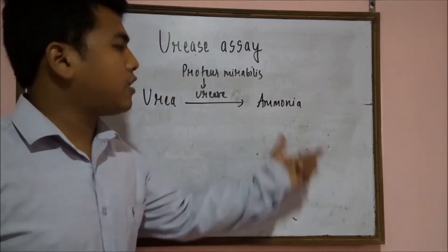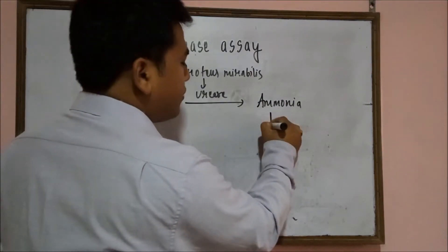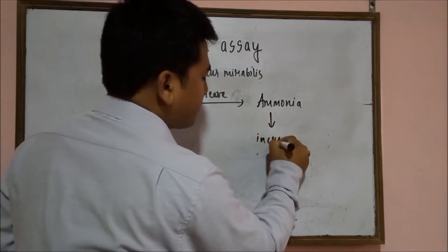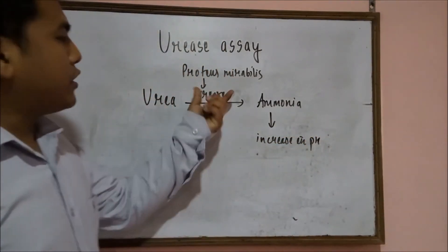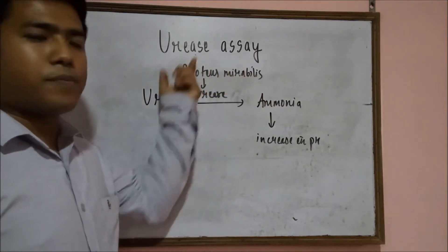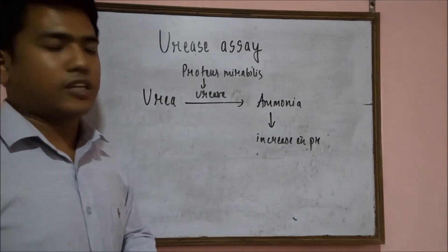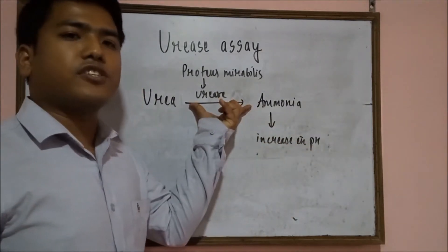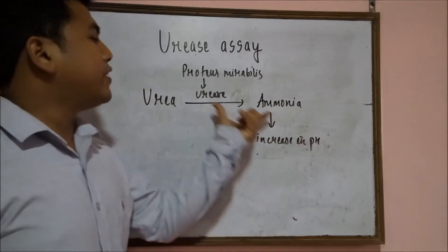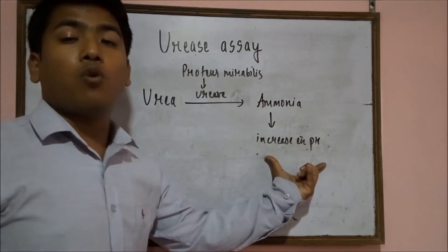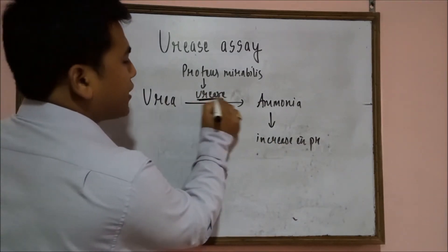Whenever the concentration of ammonia is higher in a test tube, there will be an increase in pH. If the concentration of urease is high, there will be high ammonia production; if the concentration of urease is low, there will be low ammonia production. All these changes are governed by the urease enzyme.